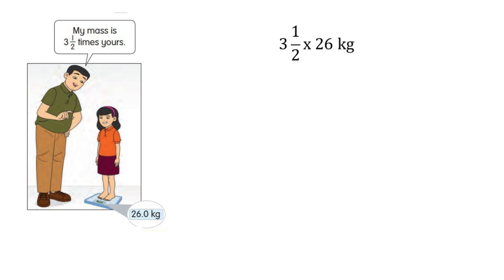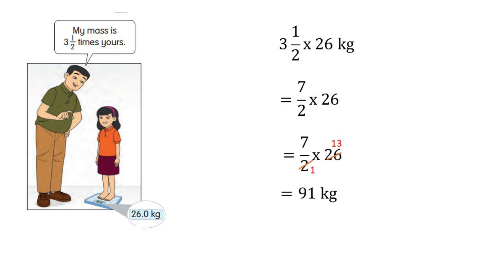For method two, we will do the calculation. Three and one over two multiplied by 26 — convert three and one over two to an improper fraction: seven over two. So seven over two multiplied by 26. Do cancellation and we will get 91 kilograms.